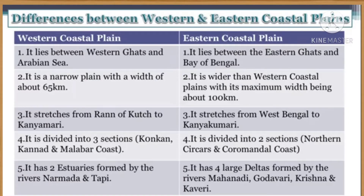Western coastal plain lies between the Western Ghats and the Arabian Sea. Eastern coastal plain lies between the Eastern Ghats and the Bay of Bengal.